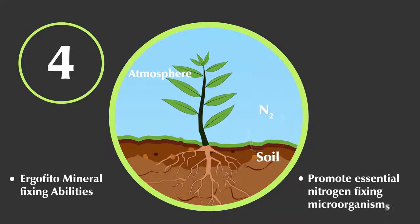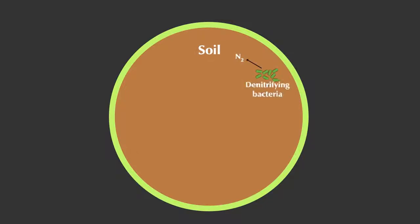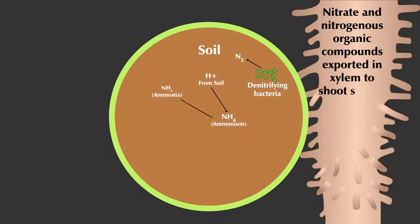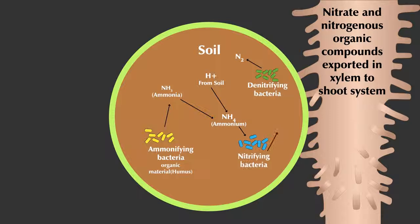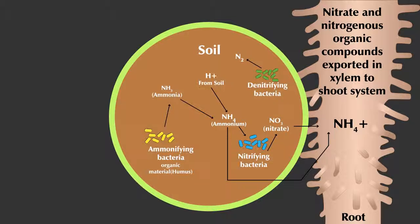And the fourth mechanism is the Ergopheto's nitrogen-fixing and mineralization ability, both by inoculating with and promoting the growth of nitrogen-fixing microorganisms that can produce forms of nitrogen that are usable by plants, and by producing enzymes that are able to mineralize key nutrients.